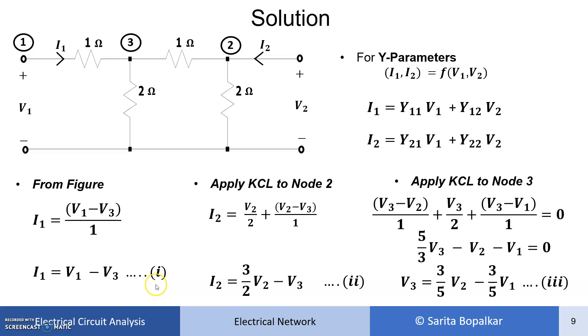So here we have three equations: equation 1, 2, and 3. Our aim is to adjust these three equations such that we can compare our equation with the standard Y parameter equation. I1 and I2 should be a function of V1 and V2. Check here: I1 is a function of V1, but we don't want this V3 term. Instead, I want V1 and V2. We can replace V3 from equation 3.